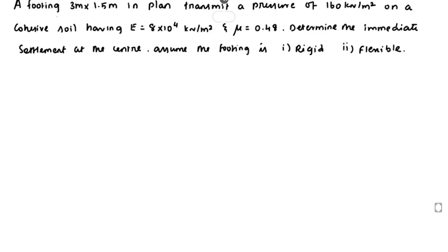Hello friends, welcome to Civil Engineering Exam. Today we are going to see a problem related to foundation engineering in the topic of immediate settlement. The problem is: a footing 3 meters by 1.5 meters in plan transmits a pressure of 160 kN/m² on a cohesive soil having E = 8×10⁴ N/m² and µ = 0.48. Determine the immediate settlement at the center.